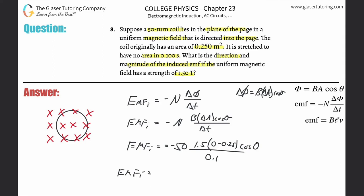So emf is going to be equal to negative 50 times 1.5 times negative 0.25 divided by 0.1, so it's 187.5, about 188. The induced emf is going to be in terms of volts because that is what emf is measured in. So that's the magnitude.